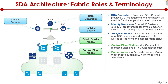Fabric border nodes sit at the edge of the network and connect the SDA fabric with non-fabric solutions. For example, if you have a thousand sites and only the first has been migrated to SDA, border nodes allow it to talk to legacy or traditional network devices. They translate fabric constructs into the old-school constructs in the rest of your environment that hasn't been fully migrated yet.